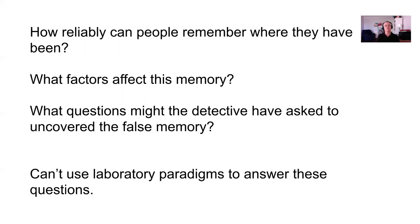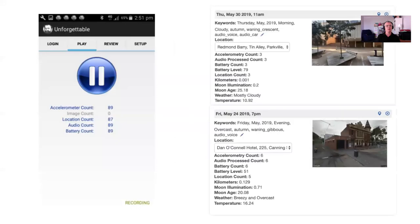In the laboratory, we manipulate things like font colors and different kinds of fractal images. We can discover general principles of memory. But in this case, we really need to know the specifics — how likely is a memory for where, or memory for when, or memory for a person likely to be an error.